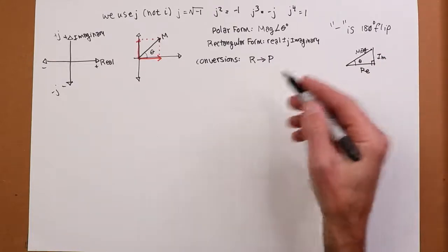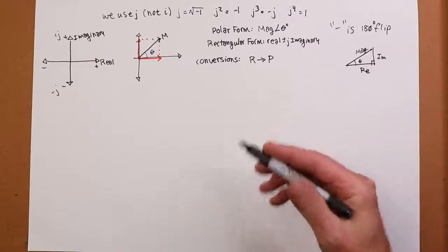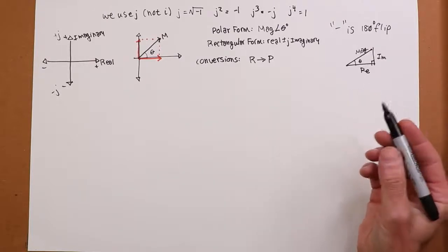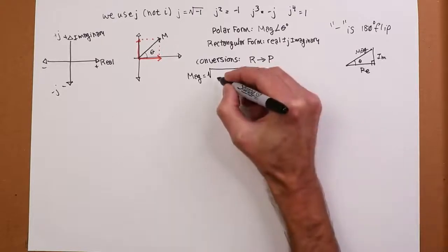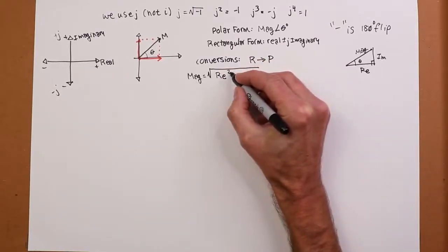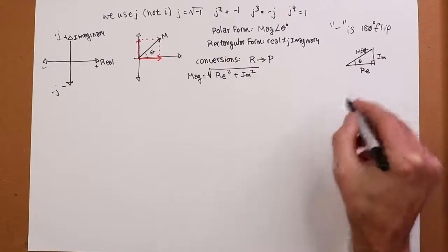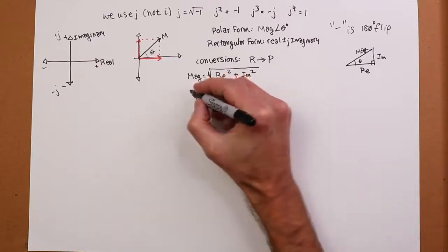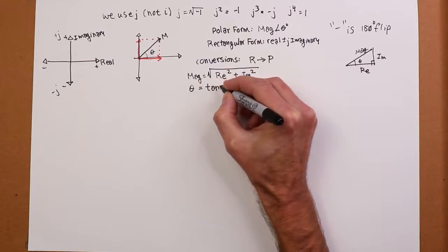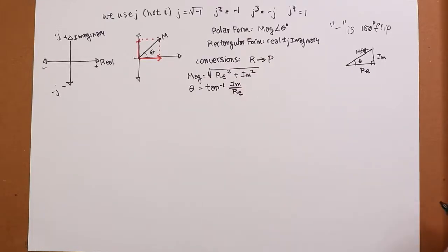So how would I, given the rectangular form - given a real and imaginary - find the magnitude and the angle? Well, to find the magnitude, we can just use Pythagorean theorem. The magnitude will just be the square root of the square of the real, which I'm just going to abbreviate as RE here, plus the square of the imaginary. Now, to get the angle theta, we just remember that tan is the opposite over the adjacent. So theta would be the arctan of the imaginary divided by the real.